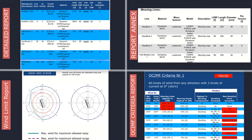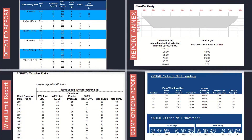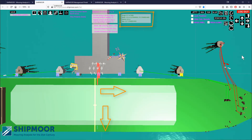Batch calculations allow testing multiple environmental conditions in one step. And as you can see, the ship's movements are also represented on screen.